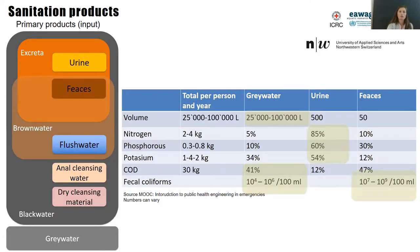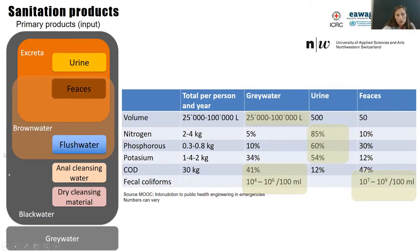When we think about sanitation products, we first think of urine and feces — what our body produces. Together, urine and feces are called excreta. If we add flush water — making it a wet rather than dry system — the combination of feces and flush water gives us brown water. Adding anal cleansing water or materials gives us black water. There is also the term wastewater, sometimes used as a synonym for black water, but I prefer black water because it clearly explains what is there.